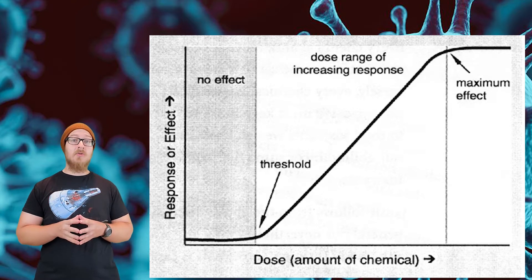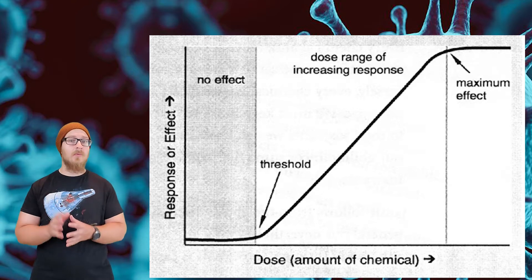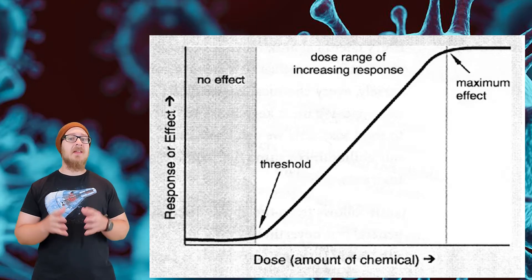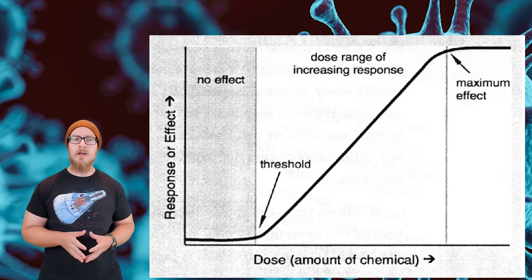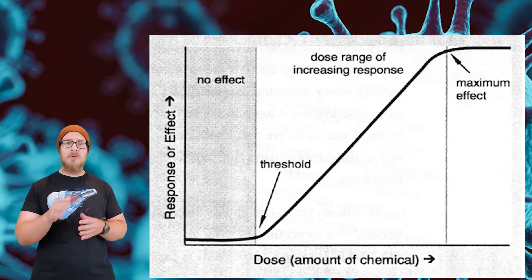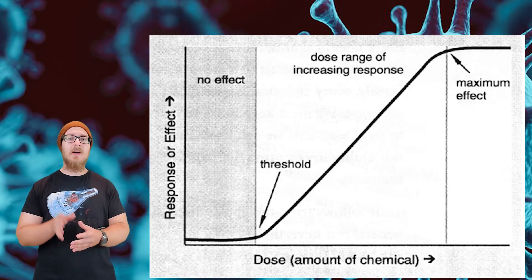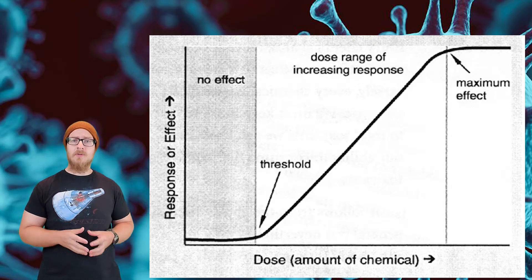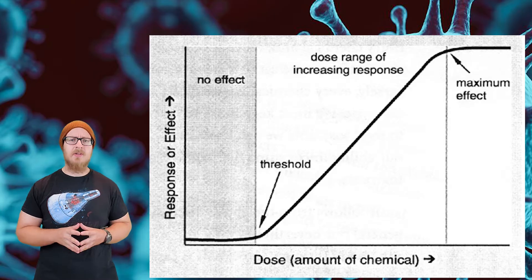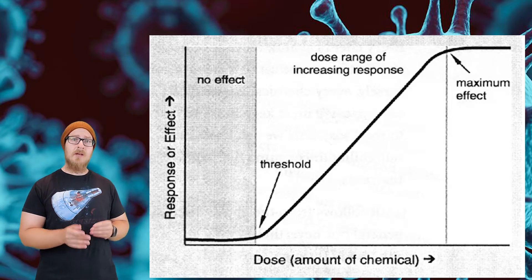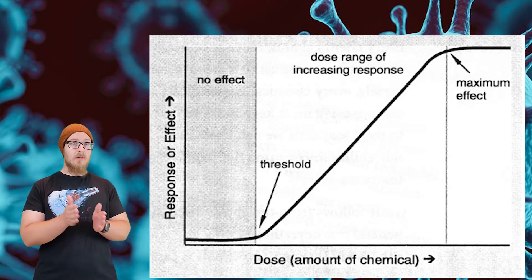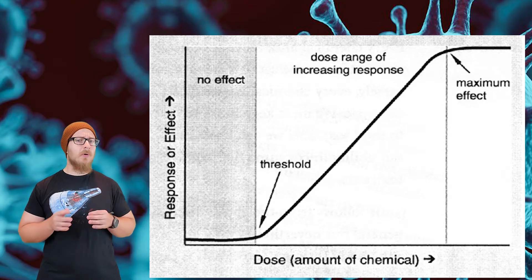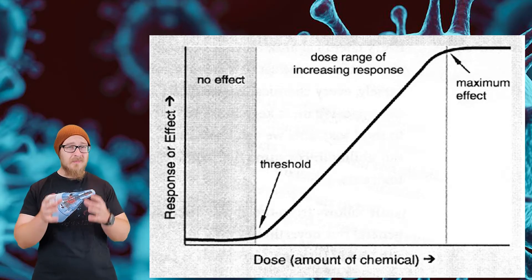So how do we measure how dangerous a certain substance is? A dose-response curve describes the effect on an organism or mortality rate in a population based on the dose of a particular toxin or drug. The way this works is you introduce a higher dose of a substance to test organisms like mice and observe what percentage of a population dies as a result of that dose. Dose-response curves are commonly measured based on dosage in milligrams of a substance per kilogram of body weight.